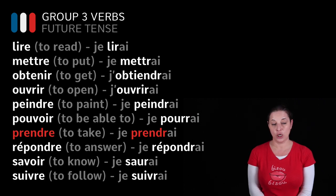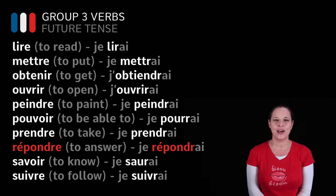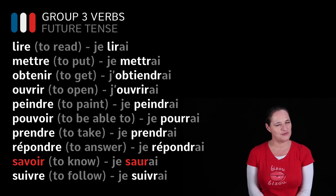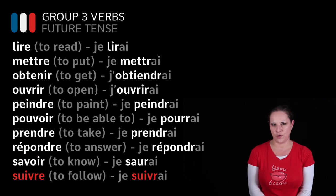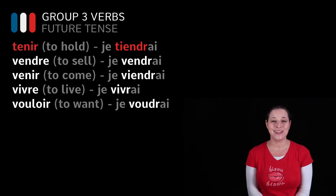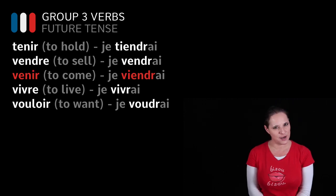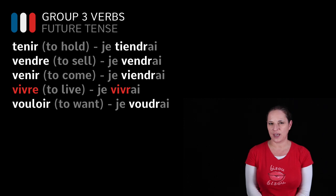PRENDRE, to take — JE PRENDRAI, I will take. RÉPONDRE, to answer — JE RÉPONDRAI, I will answer. SAVOIR, to know — JE SAURAI, I will know. Have a look at this one — the stem is really different; it's not SAV but SAUR. SUIVRE, to follow — JE SUIVRAI, I will follow. TENIR, to hold — JE TIENDRAI, I will hold. VENDRE, to sell — JE VENDRAI, I will sell. VENIR, to come — JE VIENDRAI, I will come. VIVRE, to live — JE VIVRAI, I will live.